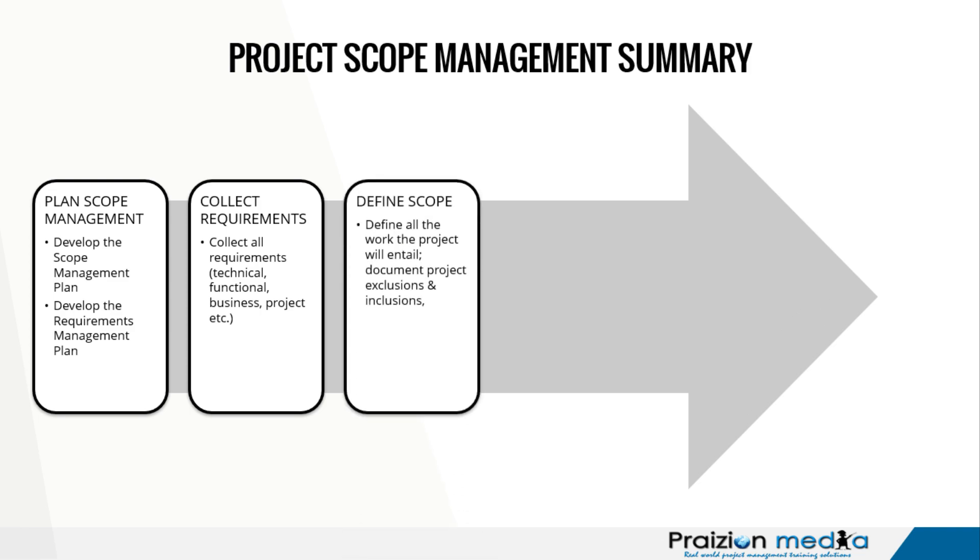The next process is Define Scope — defining all the work the project will entail. How do you know all the work the project will entail? Well, you need to know the requirements. If you don't know the requirements, how are you going to define the scope? That is why Collect Requirements comes first. If someone says they want Orange and Bouncy, what does it take to produce Orange and Bouncy? That may be different than what it takes to make red and flat. Orange and Bouncy, as a requirement, gives birth to the work needed on the project. You know the work when you know the requirements.